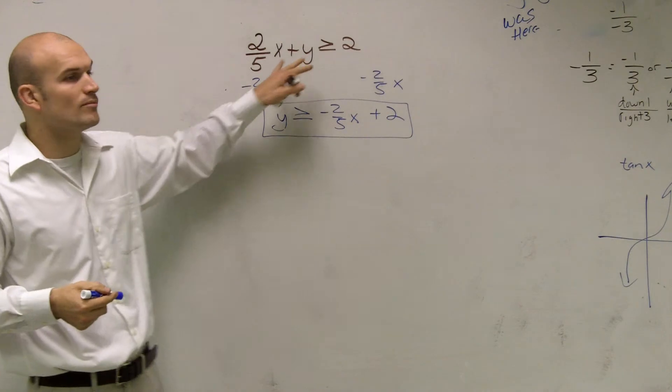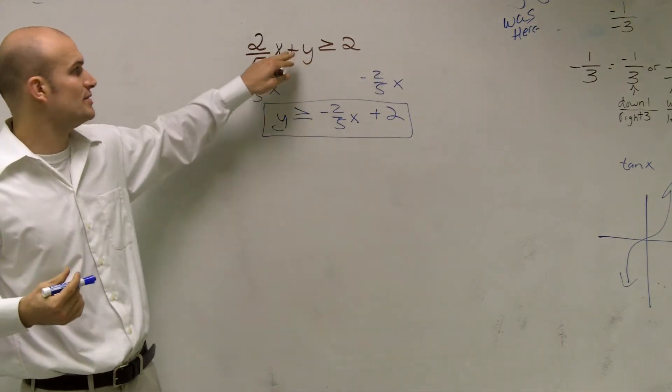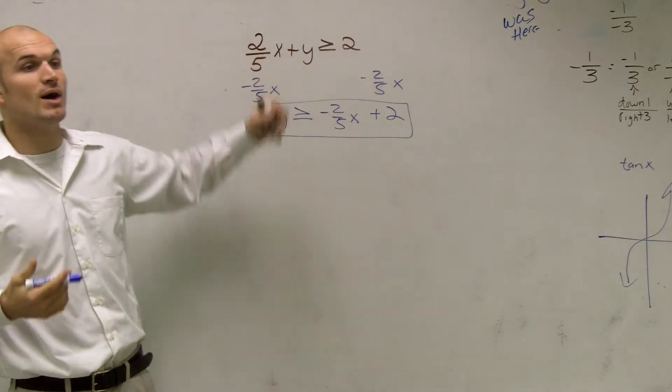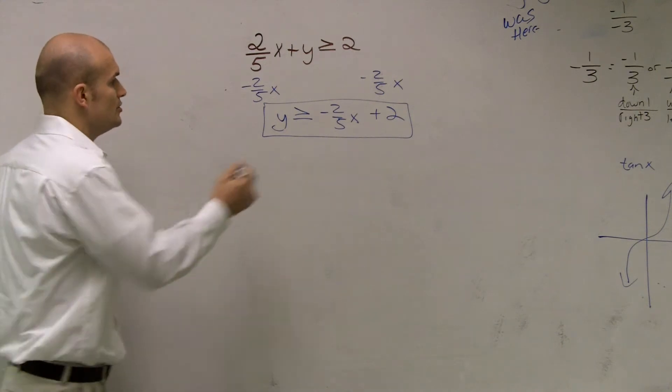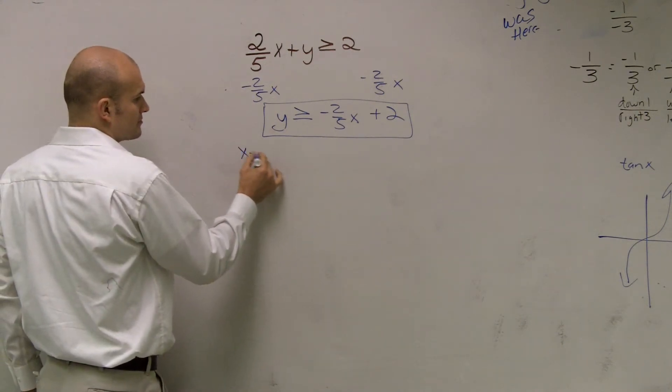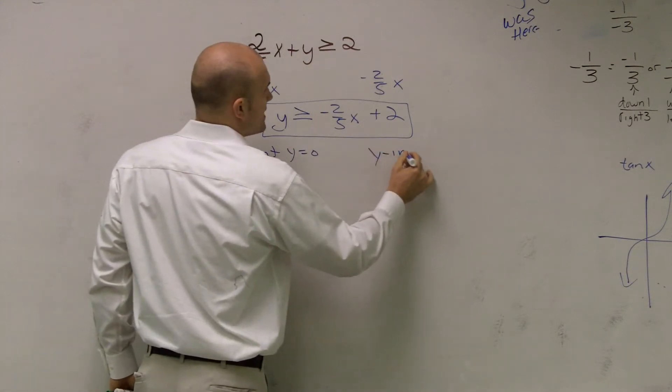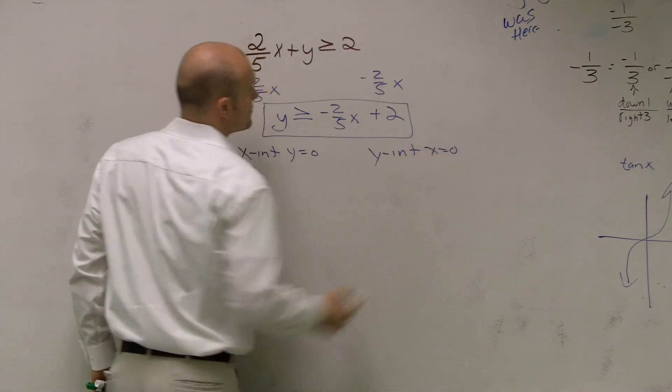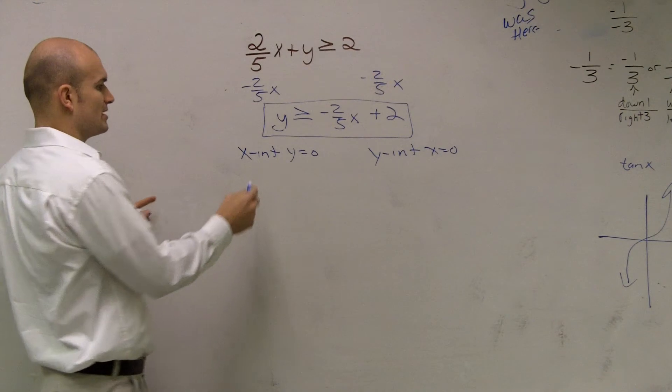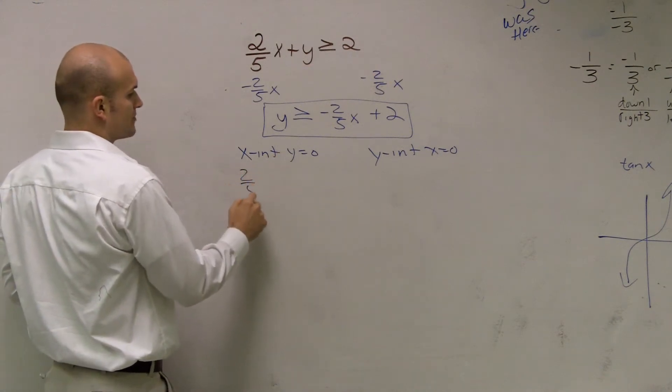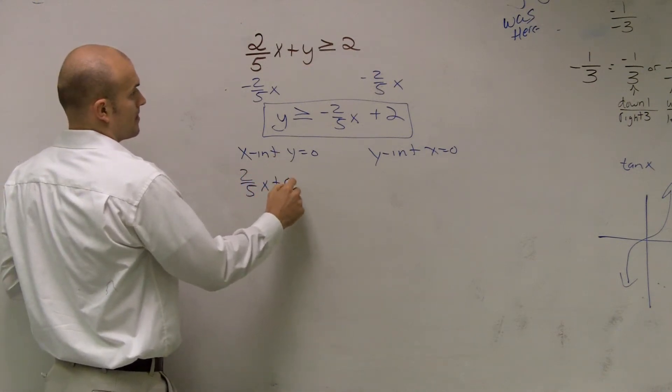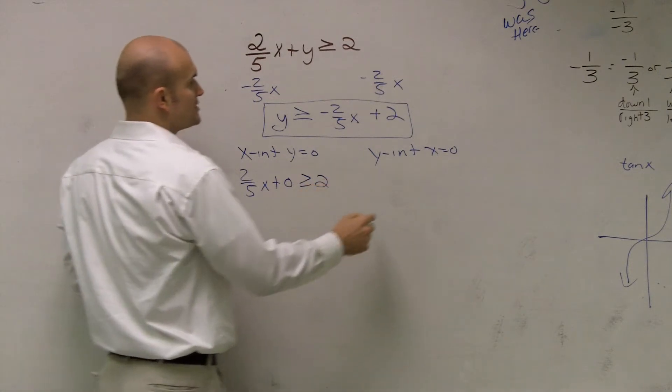It's the exact same thing. Remember, an easy way to help you out is when you have your x and y that are on the same side, you can just say the x intercept is when y equals 0. And the y intercept is when x equals 0.